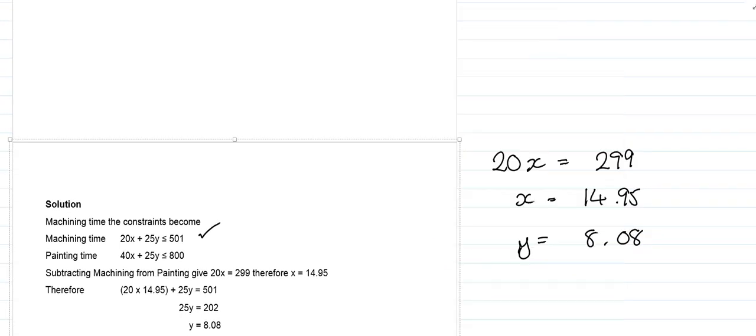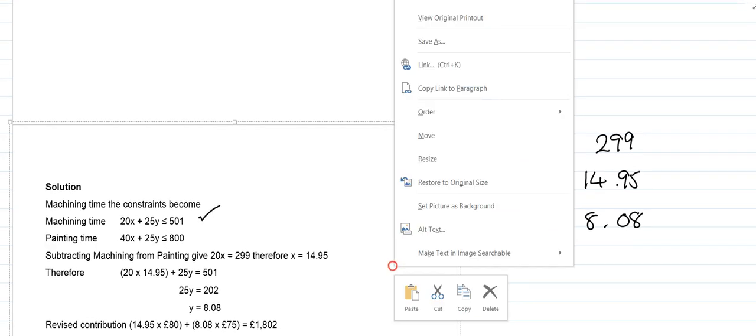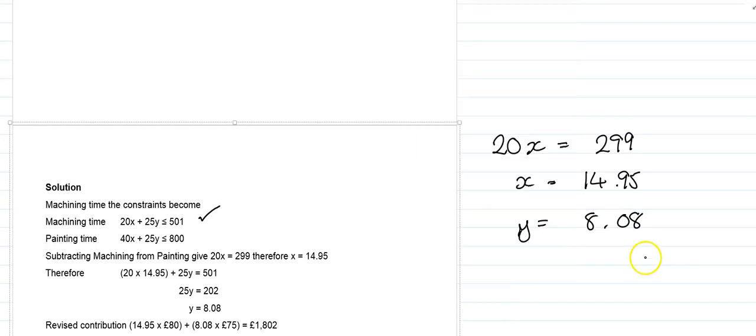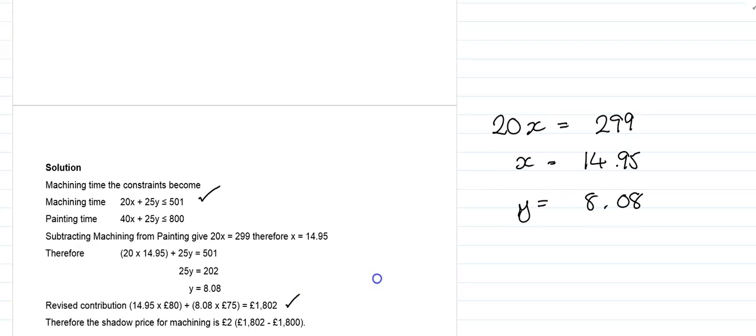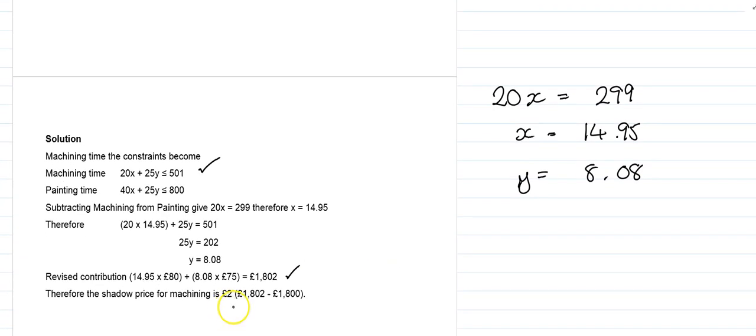With this, we solve our objective function, inserting the figures. With our new objective function, we'll get a revised contribution of £1,802, which leaves us with a shadow price for machining of £2.